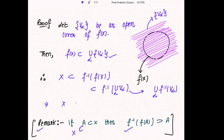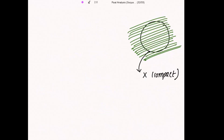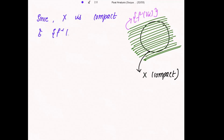So this implies X is a subset of the union of f inverse(V_α). Now X is compact, and because X is a subset of the union of f inverse(V_α), f inverse(V_α) becomes an open cover of X. Since X is compact and f inverse(V_α) is an open cover of X, by the definition of compact set, a finite subcover also exists.